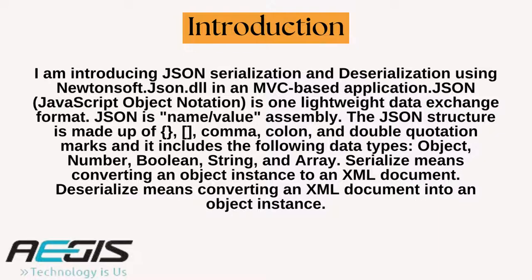JSON, JavaScript Object Notation, is one lightweight data exchange format. JSON is name-value assembly. The JSON structure is made up of comma, colon, and double quotation marks, and it includes the following data types: object, number, boolean, string, and array.